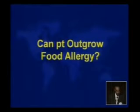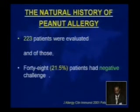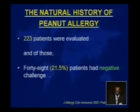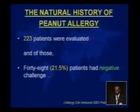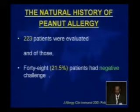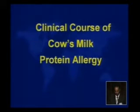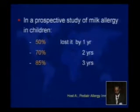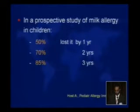A frequently asked question is: can the patient outgrow food allergy? The answer is yes for some allergens and no for others. For peanut allergy, studies show about 20 percent of patients outgrow it — contrary to the prior belief that peanut, fish, and shellfish allergy were permanent. For cow milk allergy, a prospective study found 50 percent outgrew it in the first year, 70 percent by the second year, and 85 percent by age three.